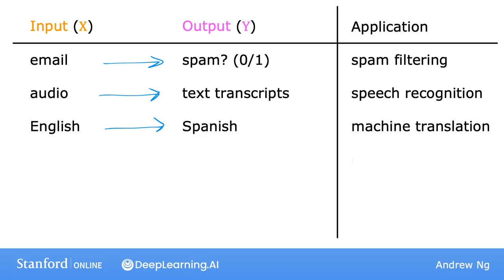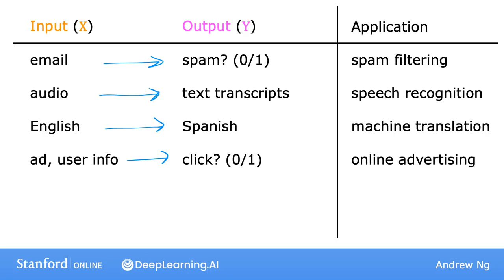The most lucrative form of supervised learning today is probably used in online advertising. Nearly all the large online ad platforms have a learning algorithm that inputs some information about an ad and some information about you, and then tries to figure out if you will click on that ad or not. Because by showing you ads you're slightly more likely to click on, every click is revenue for these large online ad platforms. This drives a lot of revenue, maybe not the most inspiring application, but it certainly has a significant economic impact.